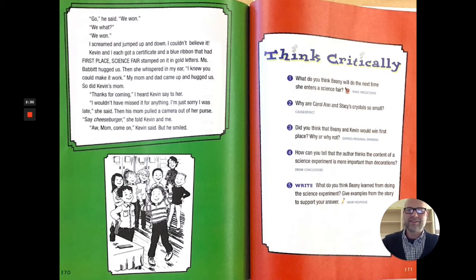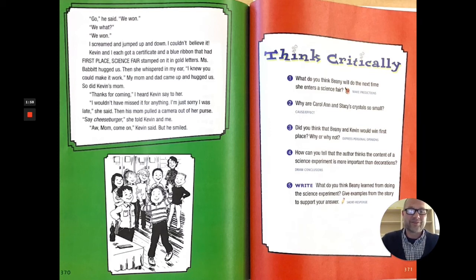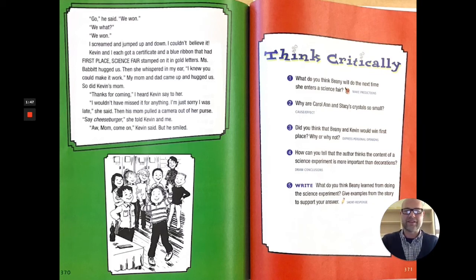Ms. Babbitt hugged us. Then she whispered in my ear, I knew you could make it work. My mom and dad came up and hugged us. So did Kevin's mom. Thanks for coming, I heard Kevin say to her. I wouldn't have missed it for anything — I'm just sorry I was late, she said. Then his mom pulled a camera out of her purse. Say cheeseburger, she told Kevin and me. Aw, mom. Come on, Kevin said. But he smiled. Remember what I said at the beginning — we would feel like we got to know the characters. This author does a great job making you feel like you're at the science fair with Beanie and Kevin.